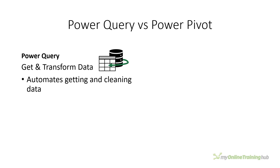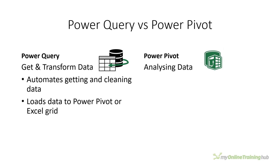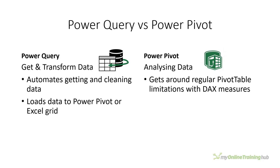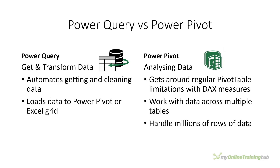So to recap: Power Query is all about automating the task of getting and cleaning data. From there you can load the data directly to the Power Pivot model or to a table in the Excel grid. Whereas Power Pivot is all about analyzing the data, enabling you to write measures with DAX, work with multiple tables of data and millions of rows. And while these tools were designed to work together, it doesn't mean you can't use them exclusively.